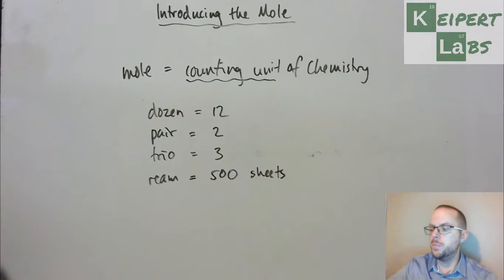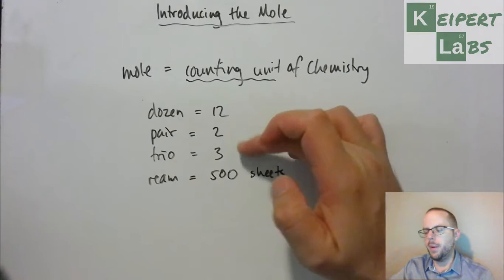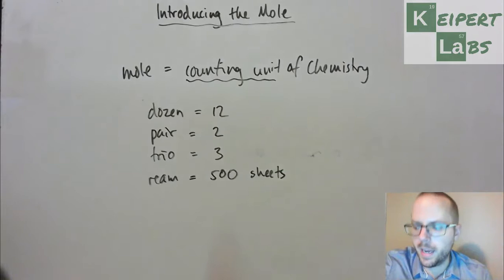Each of these sorts of things is a counting unit. You say, I want a dozen eggs, or I want a half dozen eggs, or I want two dozen eggs. I want two pairs of slippers, a trio of this or that. These are all counting units. They represent a certain number of things, a certain number of items.